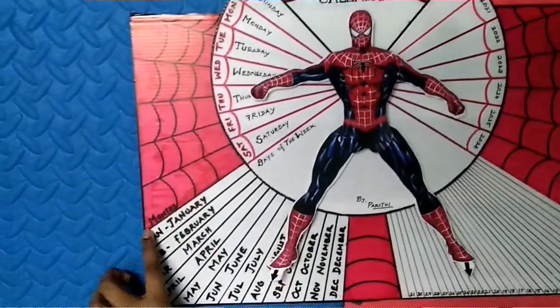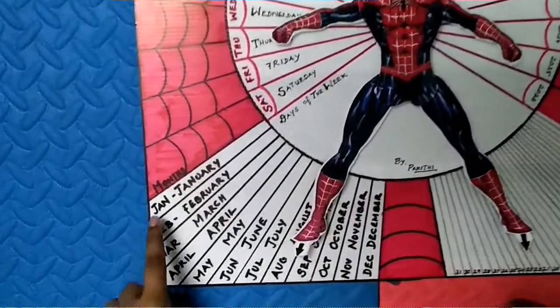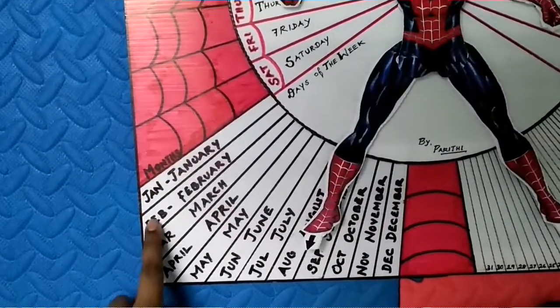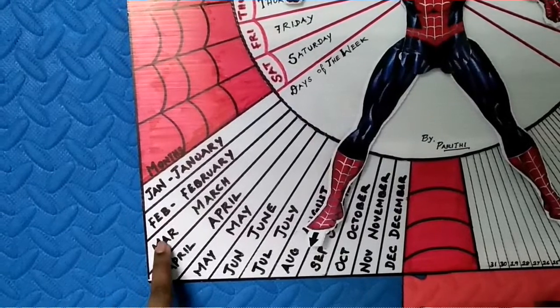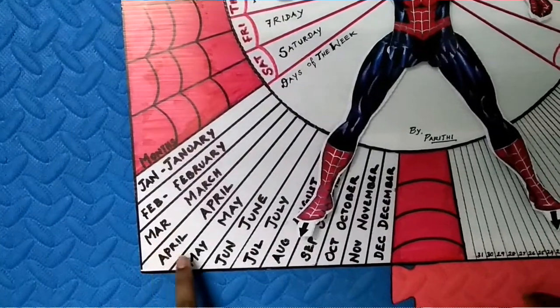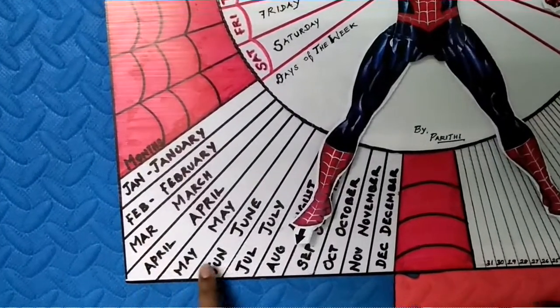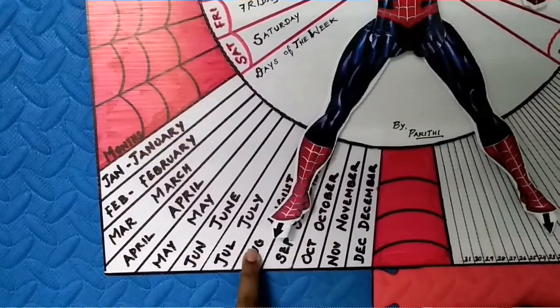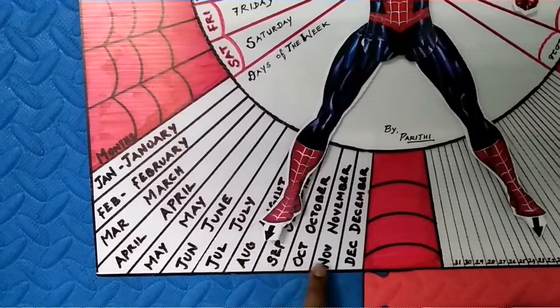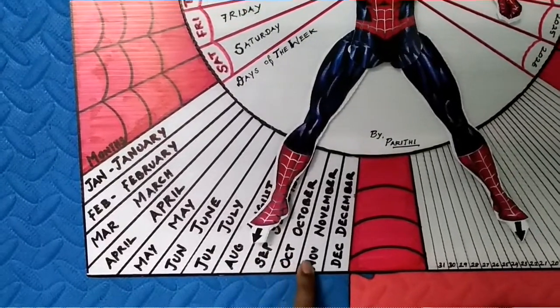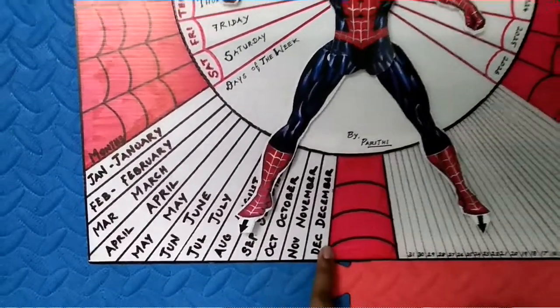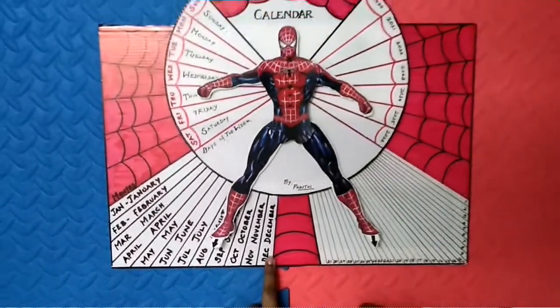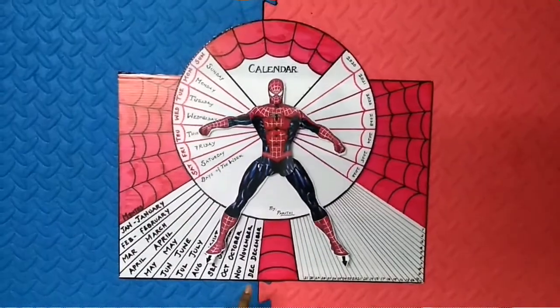In the 12 months, we have January, September, March, April, May, June, July, August, September, October, November and December.